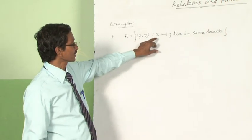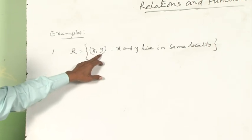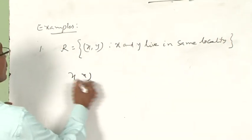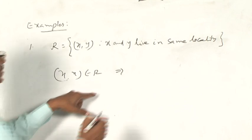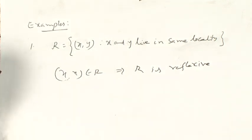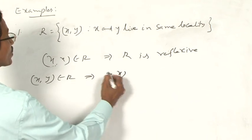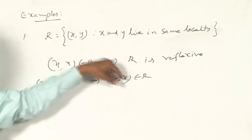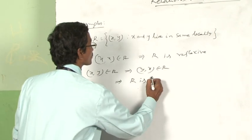Let R = {(x,y) : x and y live in the same locality}. Since x lives in the same locality as x, we have (x,x) belongs to R, so R is a reflexive relation. Also, if (x,y) belongs to R, then y comma x also belongs to R, because x and y live in the same locality implies y and x also live in the same locality. So R is a symmetric relation.